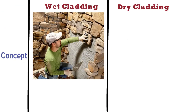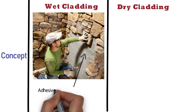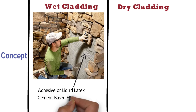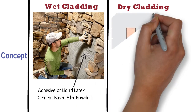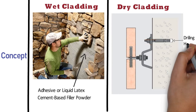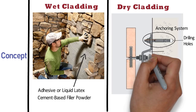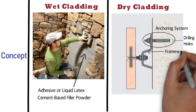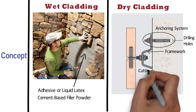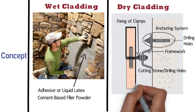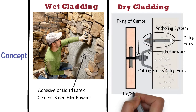In case of wet cladding, the stone or tile is pasted on the wall with the help of adhesive or a liquid latex, combined with a cement-based filler powder. Whereas dry cladding involves drilling holes into the surface, fixing the anchoring system, installation of framework, cutting the stone in matrix or drilling holes, fixing of clamps, and then installation of tile or stone.